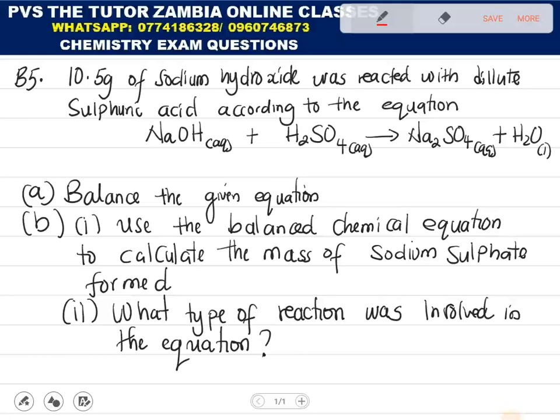The question says, 10.5 grams of sodium hydroxide was reacted with dilute sulfuric acid according to the equation. We have sodium hydroxide react with sulfuric acid, giving us sodium sulfate and water.